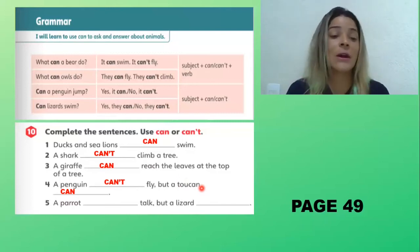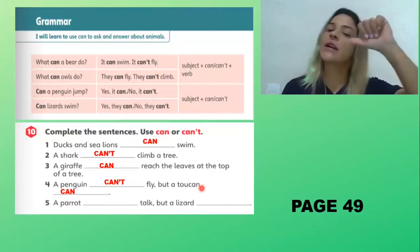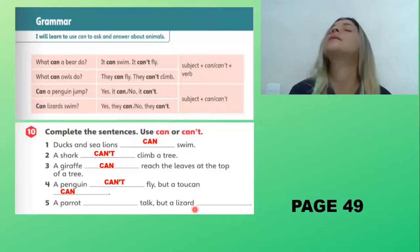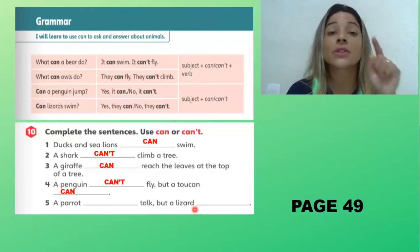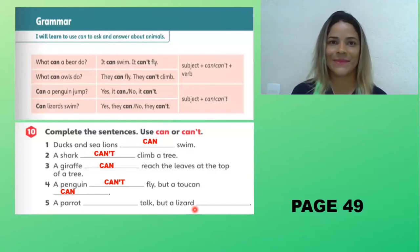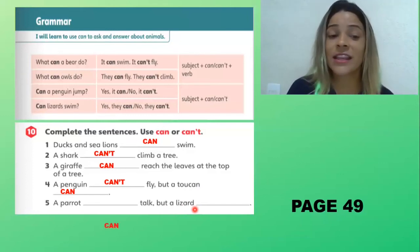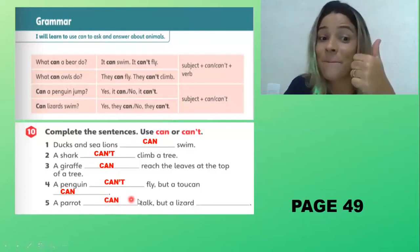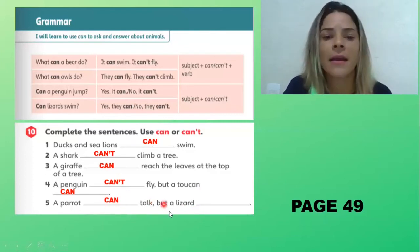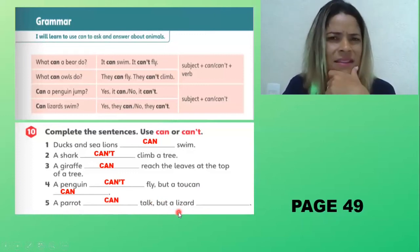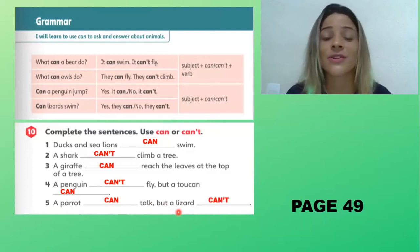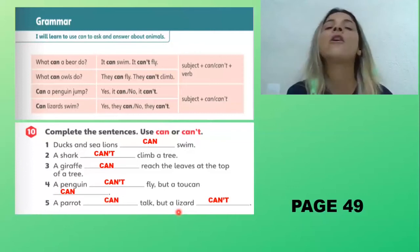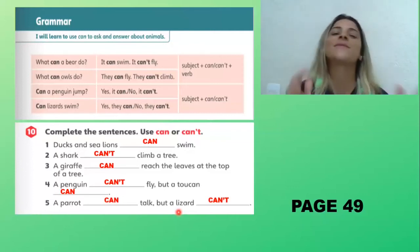Number five: a parrot — can or can't talk? But a lizard — can or can't? Try to do it. The answer: a parrot can talk — um papagaio pode falar. E o lagarto? Can or can't? The answer: can't — já o lagarto não pode, ele não consegue falar.